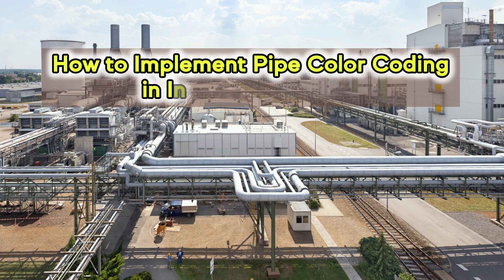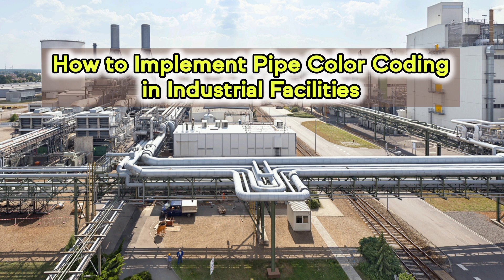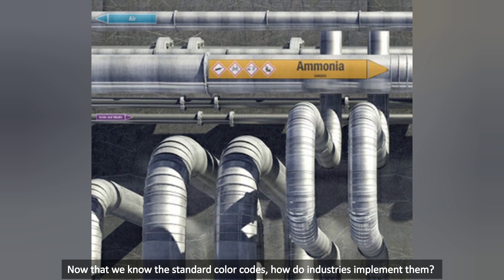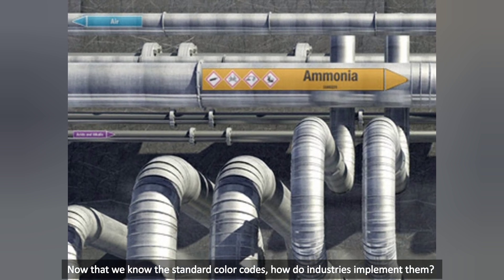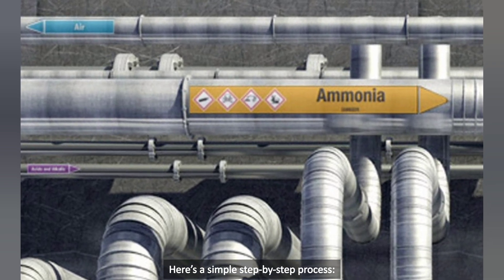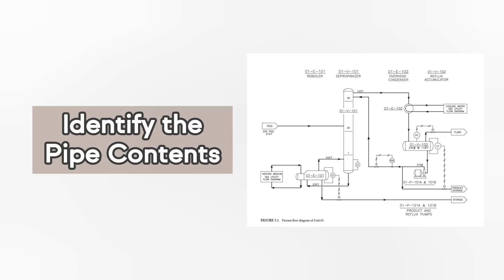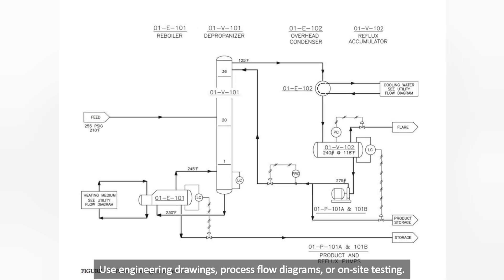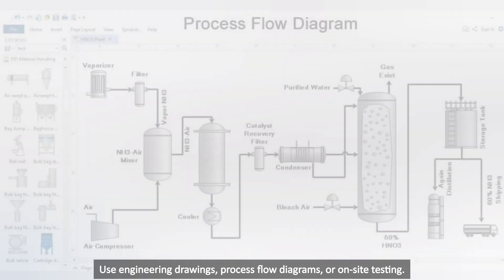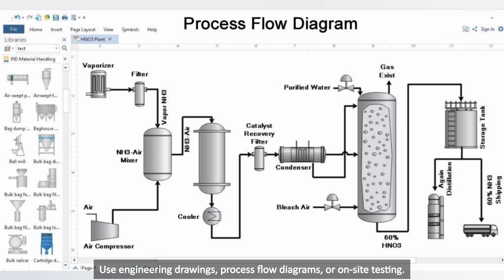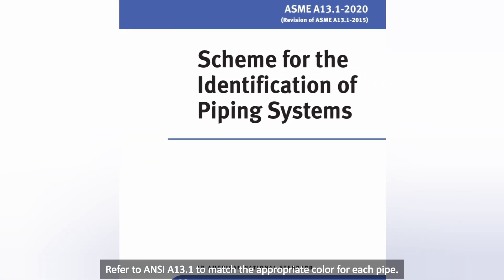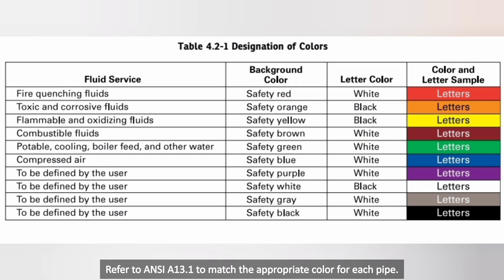How to implement pipe color coding in industrial facilities. Now that we know the standard color codes, how do industries implement them? Here's a simple step-by-step process. Step 1: Identify the pipe contents — use engineering drawings, process flow diagrams, or on-site testing. Step 2: Select the correct color — refer to ANSI A13.1 to match the appropriate color for each pipe.